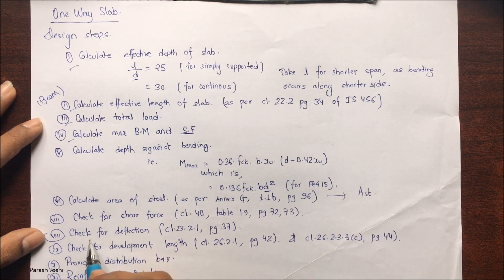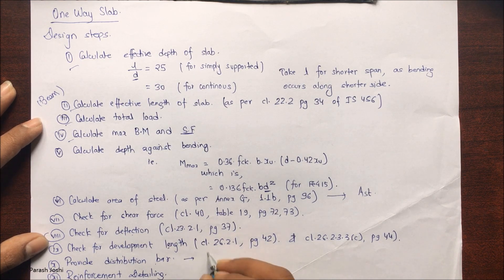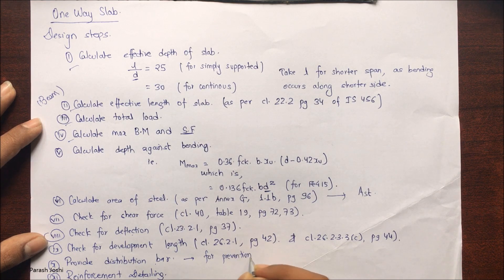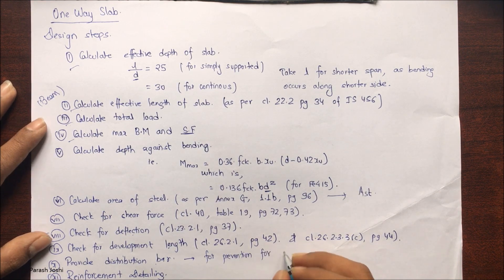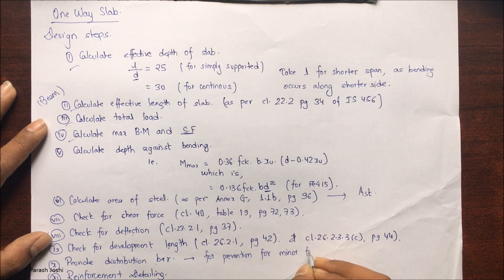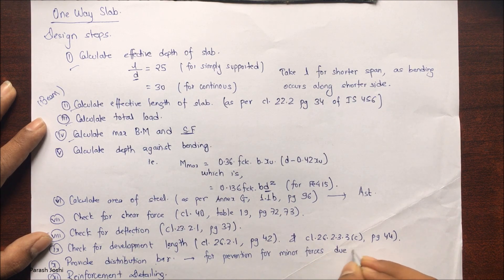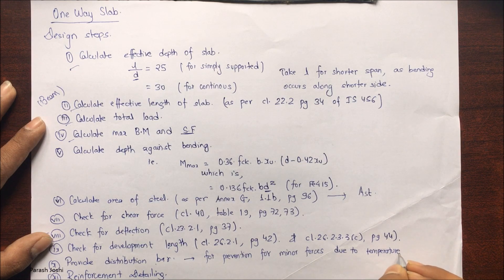Check for shear force, check for deflection, development length, provide distribution bar. Make sure the distribution bar is provided for the prevention of the formation of cracks due to the temperature variation. The distribution bars are provided along the longer side and the main reinforcement are provided along the shorter side, because the shorter side goes for the deflection.